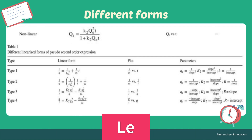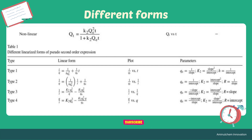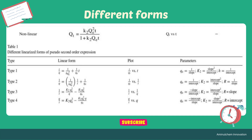The second one is the linearized forms of the pseudo second order reaction. There are four types of linear form. Type one is t divided by qt equal to 1 divided by k2·qe² plus t divided by qe, and the plot is t divided by qt versus t. Similarly, there are second, third, and fourth forms.